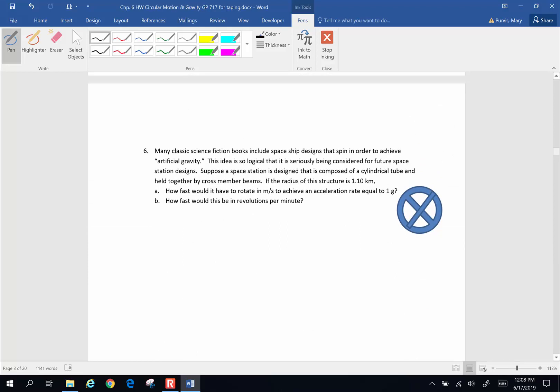Let's see about number 6. Many classic science fiction books include spaceship designs that spin in order to achieve artificial gravity. This idea is so logical that it is seriously being considered for future space station designs. Suppose a space station is designed that is composed of a cylindrical tube and is held together by cross-member beams. If the radius of this structure is 1.1 kilometers, so my radius is 1.10 kilometers, how fast would it have to rotate in meters per second to achieve an acceleration of 1g?